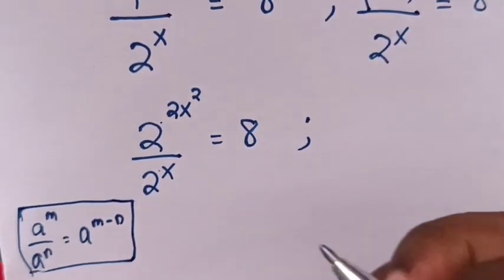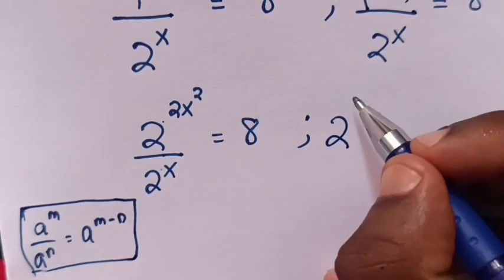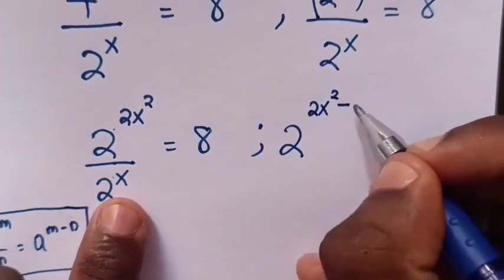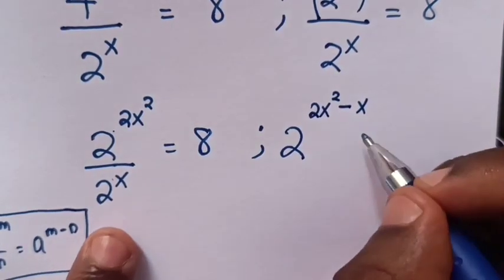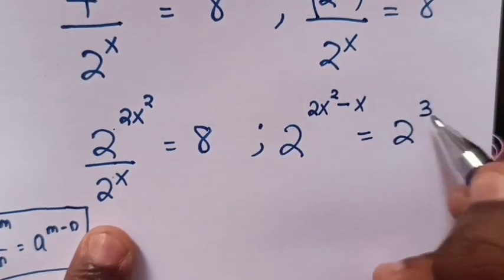Therefore, here it will be 2 to the power 2x squared minus x equals 8, which is the same as 2 to the power 3.